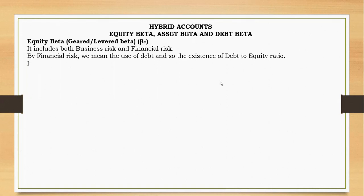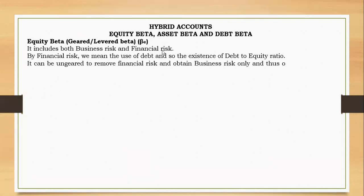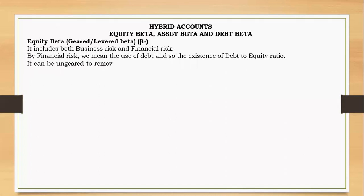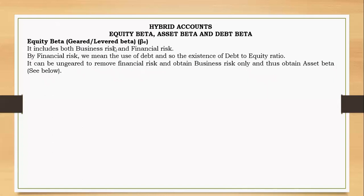The beta can be expressed in terms of geared or ungeared. By saying geared beta, we mean that debt has been used, so there is financial risk. It can be ungeared — meaning the debt impact, the financial risk, is removed — and you remain with business risk alone. This is called the asset beta. So asset beta is obtained by removing the financial risk from equity beta.